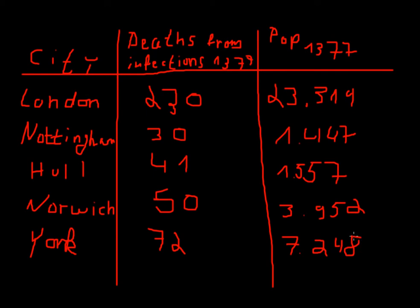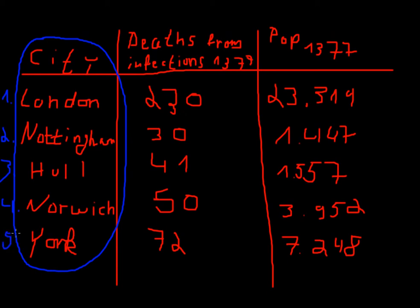Well, obviously the English cities in 1377 are our observations. These cities are our observations. And again, this would be observation one, observation two, observation three, four, and five. London in 1377 is observation number one.